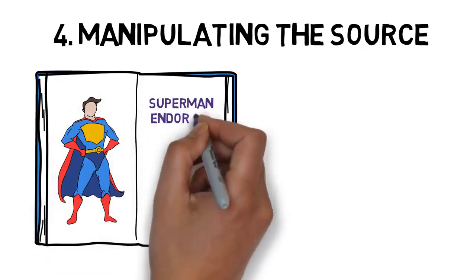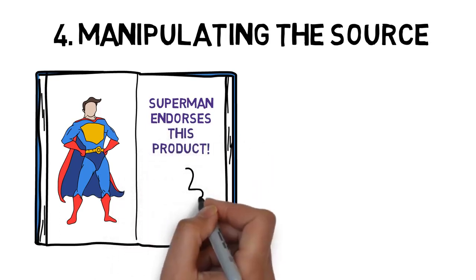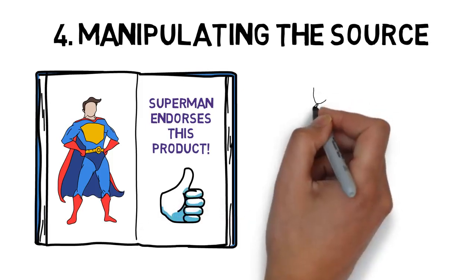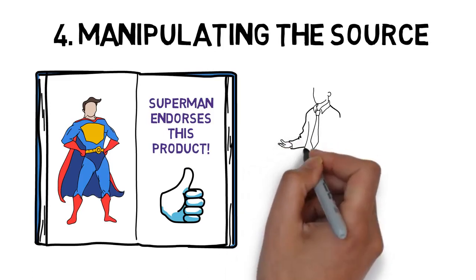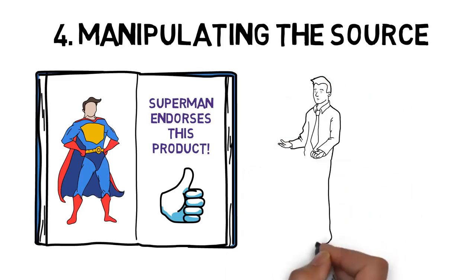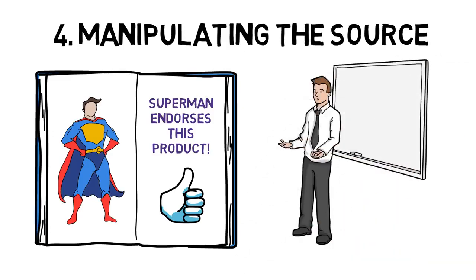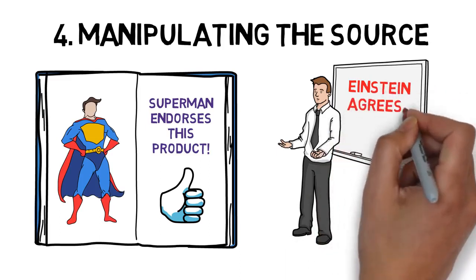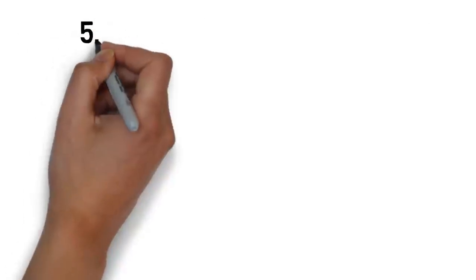However, you can also use this to your advantage if you're trying to persuade someone. I call this manipulating the source, and it's very powerful. If the inherent logic of your argument isn't doing the trick, try making an argument about the source of the information. So if you want to prove something to be true, look up someone famous or well regarded who supports your side. And if you want to prove something to be false, do your best to undermine the source of their argument. This will go a long way in the complex and intricate game of persuasion.